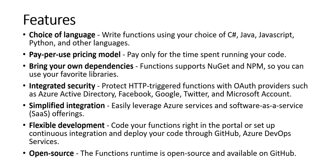Bring your own dependencies — Functions supports NuGet and npm so you can use your favorite libraries. Integrated security — protect HTTP trigger functions with OAuth providers such as Azure AD, Facebook, Google, Twitter, and Microsoft Account. Simplified integration to easily leverage Azure services and SaaS offerings. Flexible development — code your functions right in the portal or set up continuous integration and deploy your code through GitHub, Azure DevOps, or Azure Pipelines.